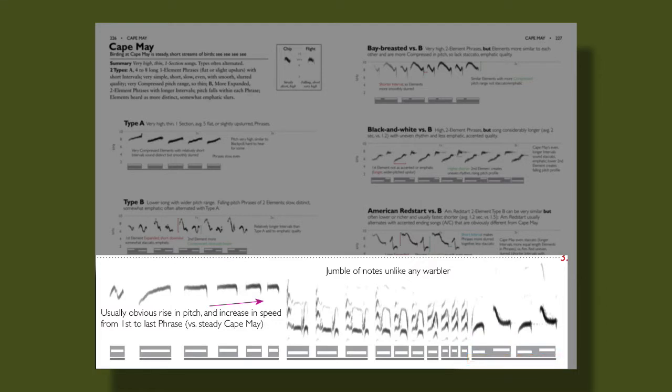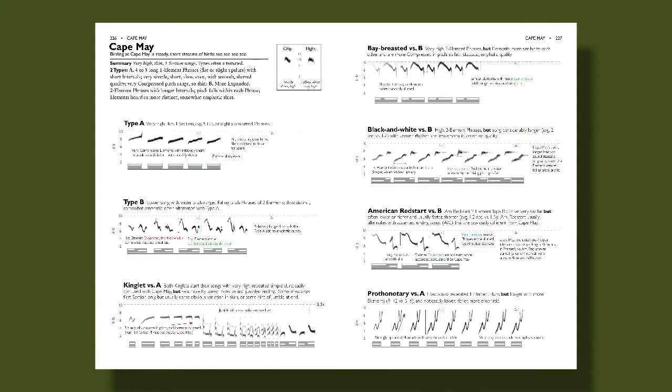By being able to count the number of elements or phrases or sections of the song, we can separate two similar songs or find diagnostic information that'll help us with an ID. The sonograms draw a picture of the sound and let us look carefully at all its important components, and the combination of hearing a song and seeing it on the page can be a very effective way for remembering it in the field.